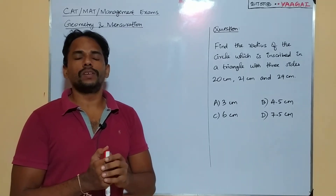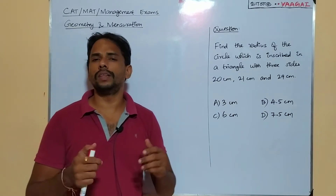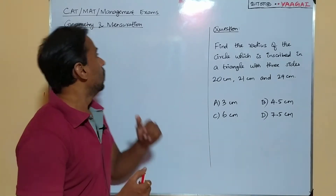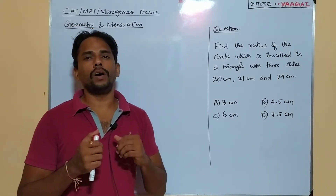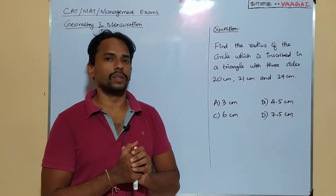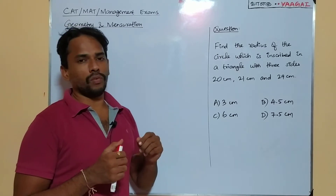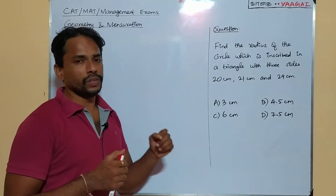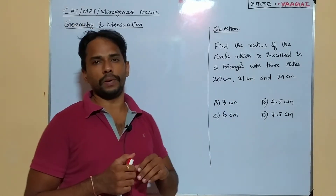Hi and hello dear friends, welcome back once again to our channel Vagai Academy of Mathematics. This playlist is where you can find videos related to CAT, MAT, and other management exams. This session we have a problem from geometry and mensuration. Our question is: find the radius of the circle inscribed in a triangle with three sides 20 cm, 21 cm, and 29 cm.